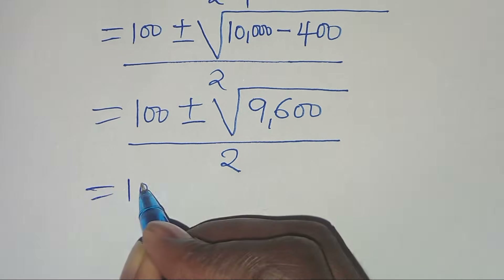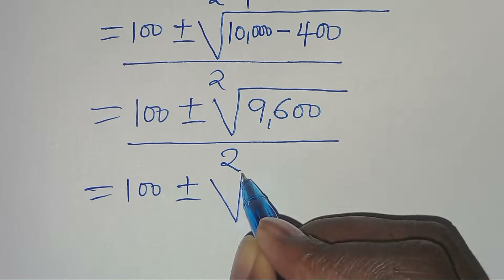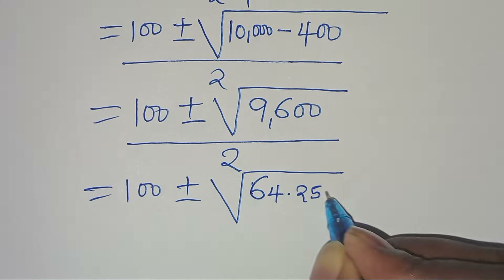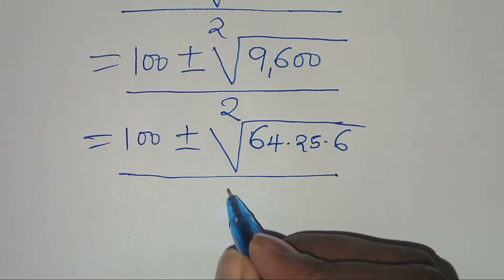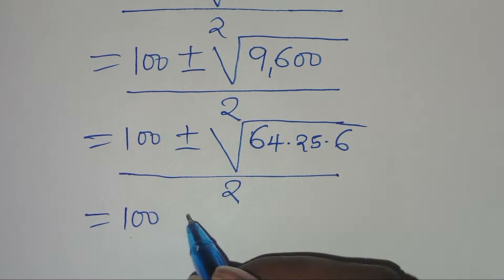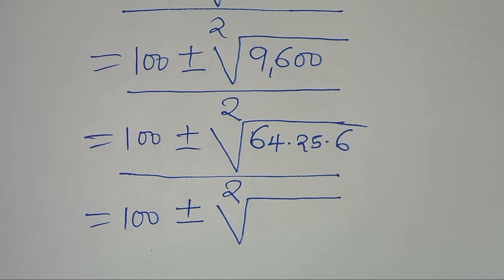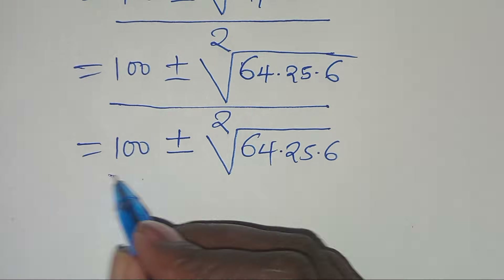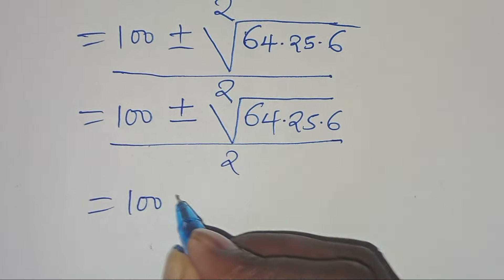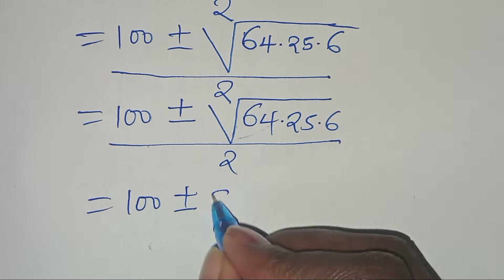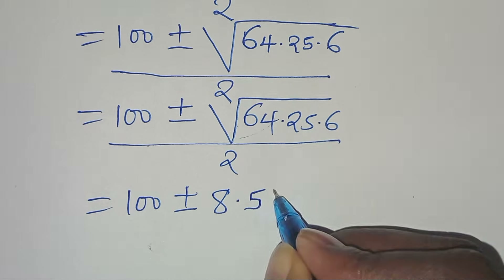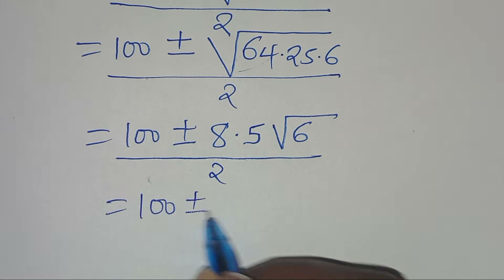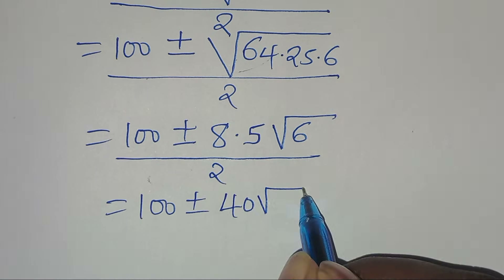We can express 9600 as 64 times 25 times 6. So we have the square root of 64 — which is 8 — times the square root of 25 — which is 5 — times the square root of 6. This gives 8 times 5 equals 40, so the expression becomes 100 plus or minus 40 square root of 6, all divided by 2.